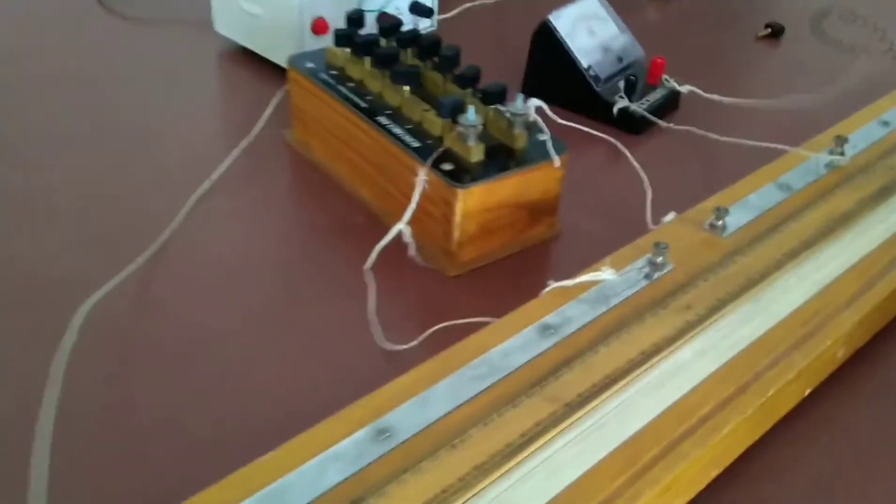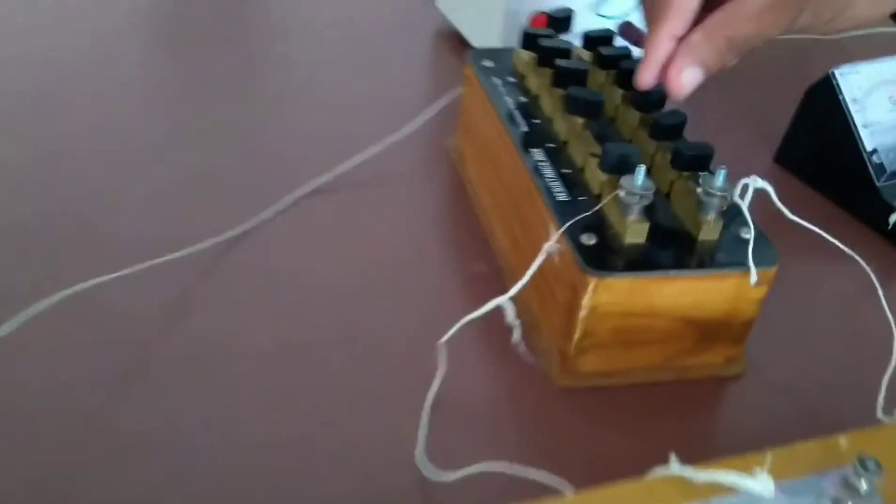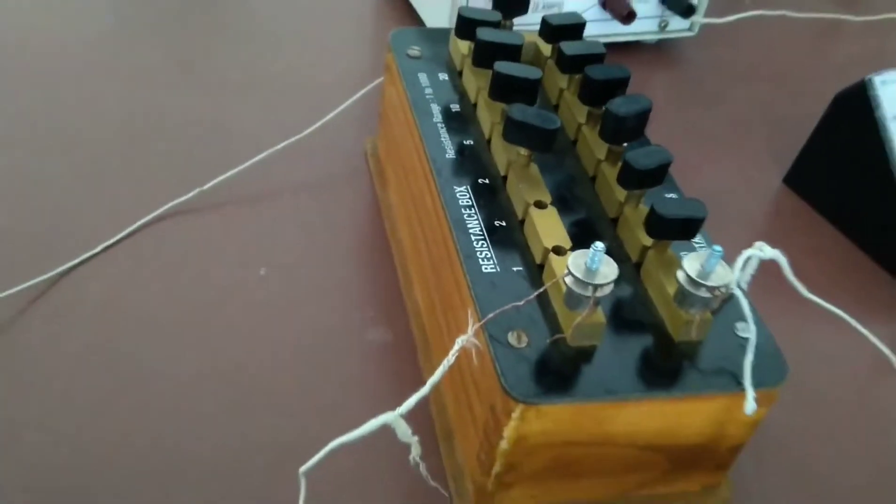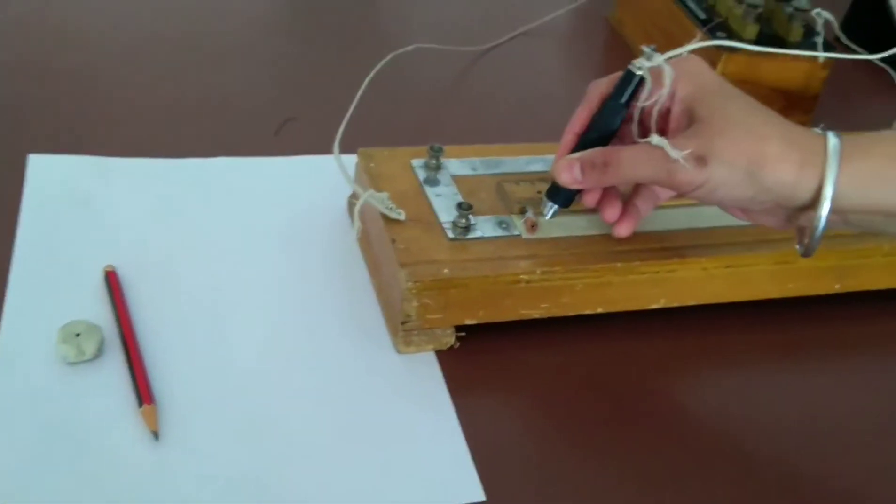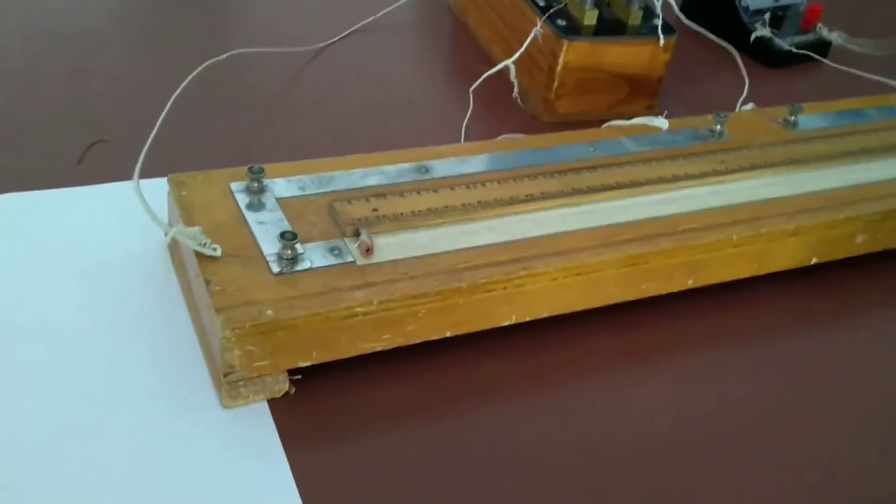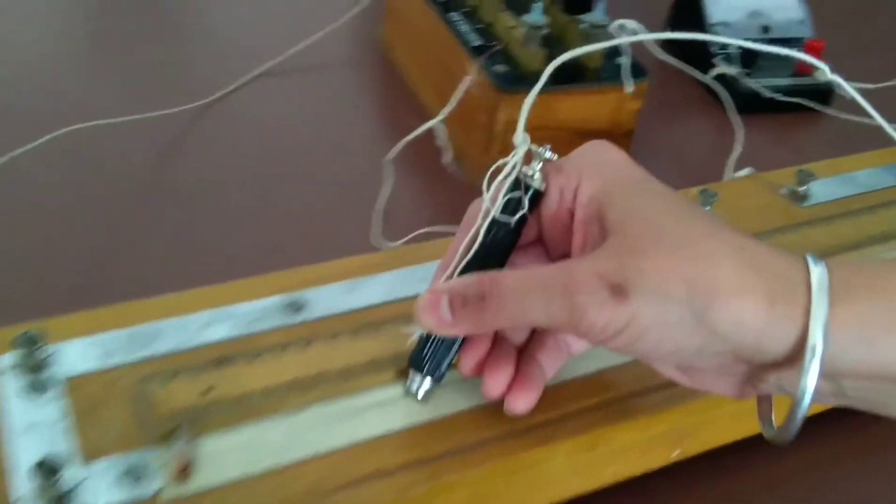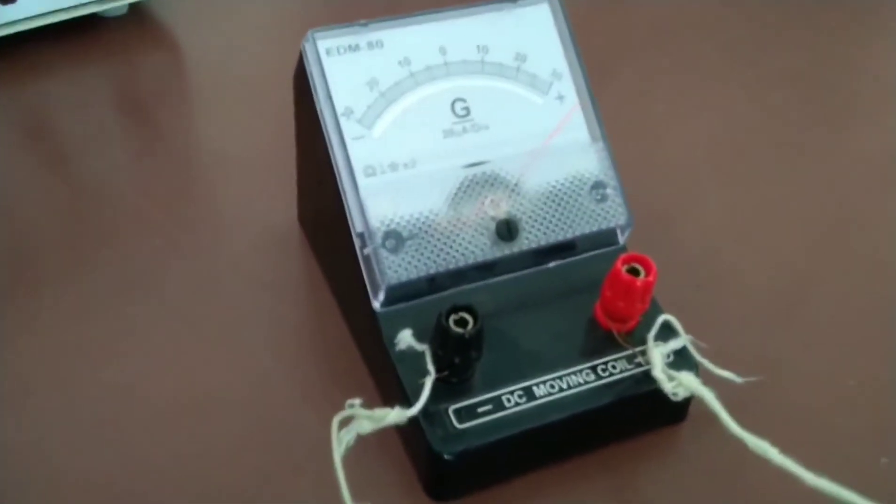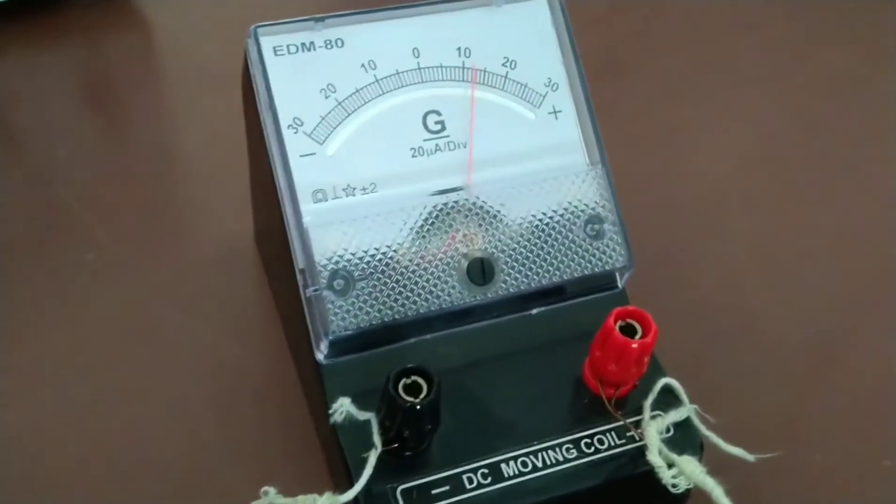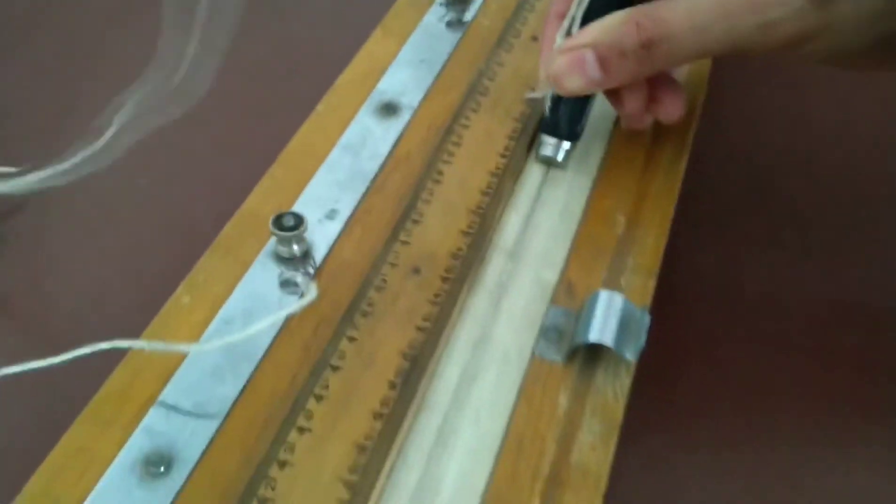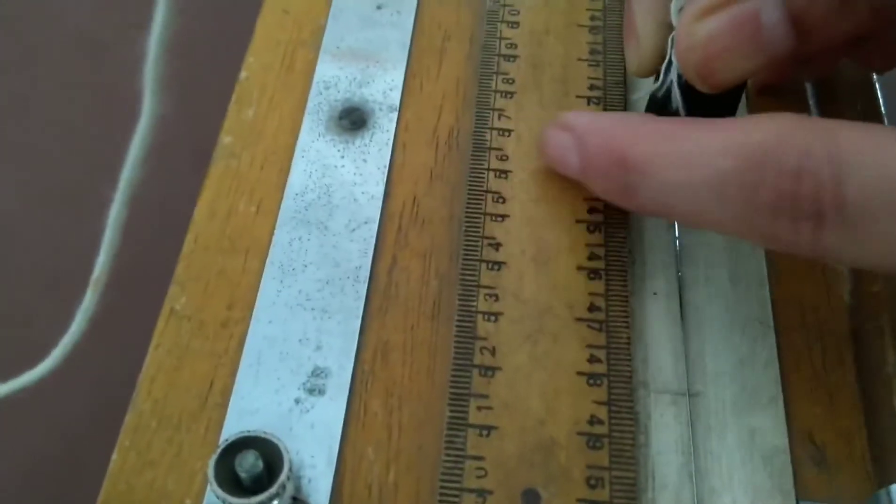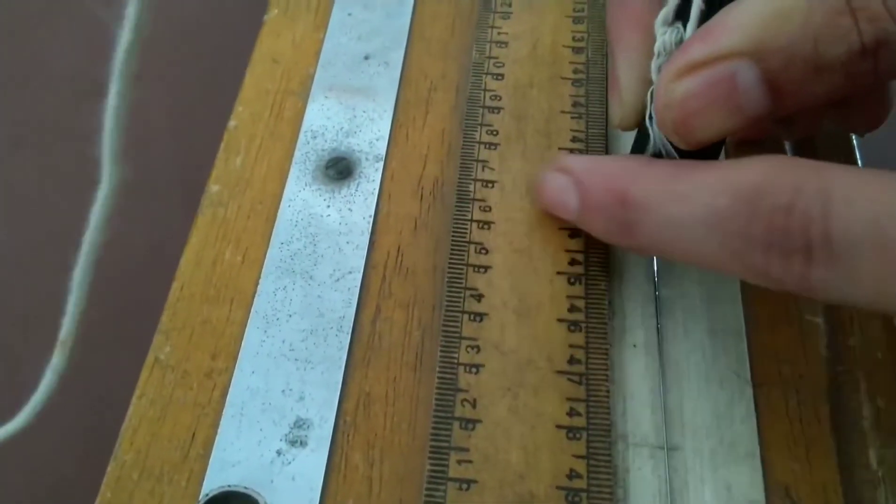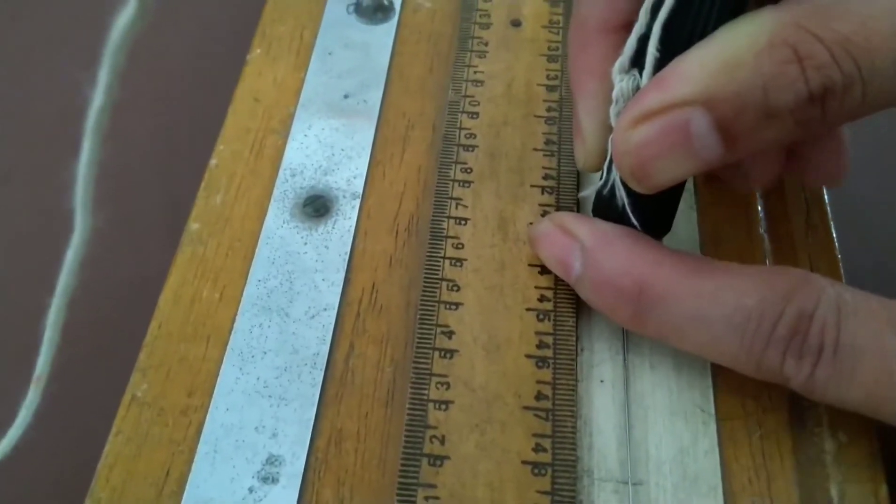Let's take one more reading. Now we have given the 3 ohm resistance in the circuit. Again we put the jockey on this slide wire and move it and keep watching the galvanometer. When this galvanometer comes to zero, it is the null point and we note down the reading that is 56 or 56.5 cm. This is our second reading.